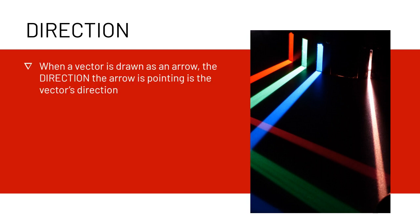Now we're going to look at a little bit more detail at direction. When a vector is drawn as an arrow, the direction the arrow is pointing is the vector's direction, which makes a lot of sense. Direction can be labeled in different ways.